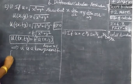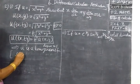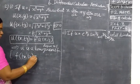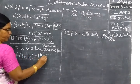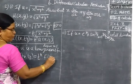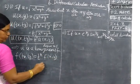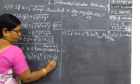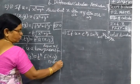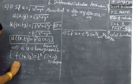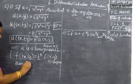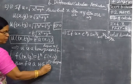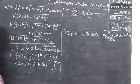Now I write the definition for this. f of tx, ty equal to t power n times f of x, y, where f of x, y is the original function and n is the degree. By this definition, f is a homogeneous function.